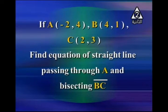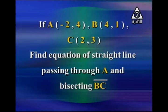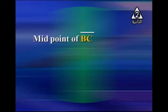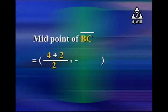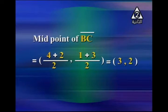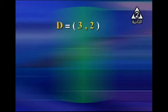Given A(−2, 4), B(4, 1), and C(2, 3), find the equation of the straight line passing through A and bisecting BC. Bisecting BC means dividing it into two equal parts, so the line passes through the midpoint of BC. The midpoint D of BC = ((4+2)/2, (1+3)/2) = (3, 2).